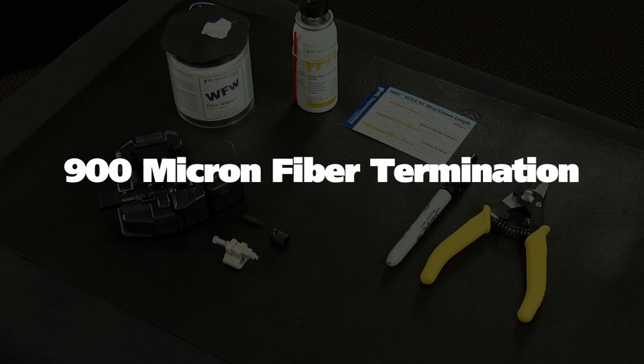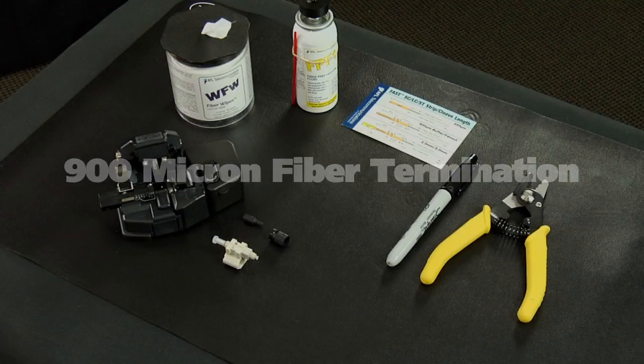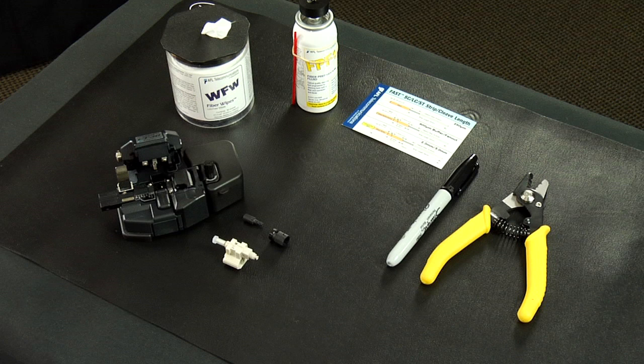900 micron fiber termination. The components and tools required for installation are: fast ST connector assembly, a 900 micron boot, a fiber stripper, a CT30A cleaver, fiber prep fluid, lint-free cloth wipes, a marker pen, and a strip template.